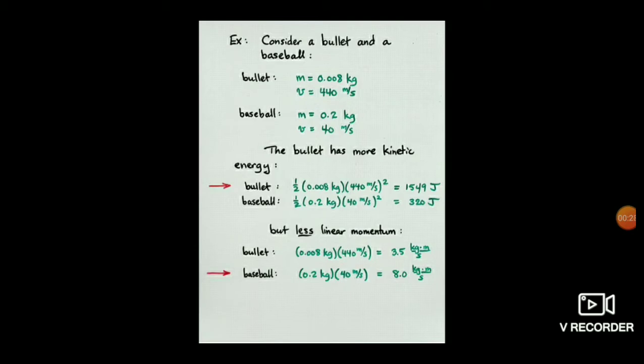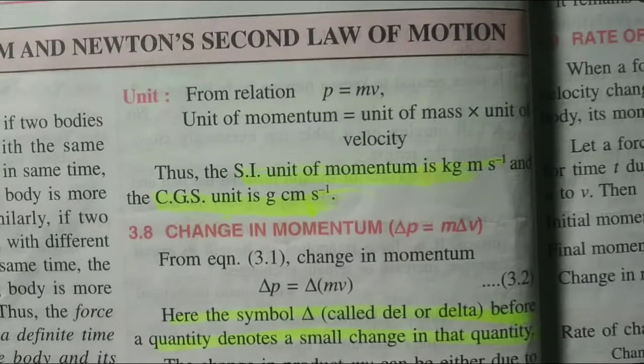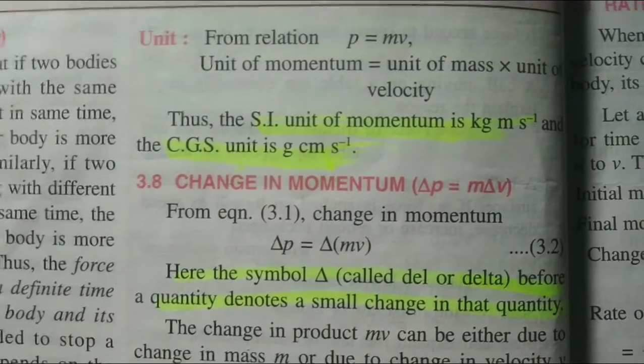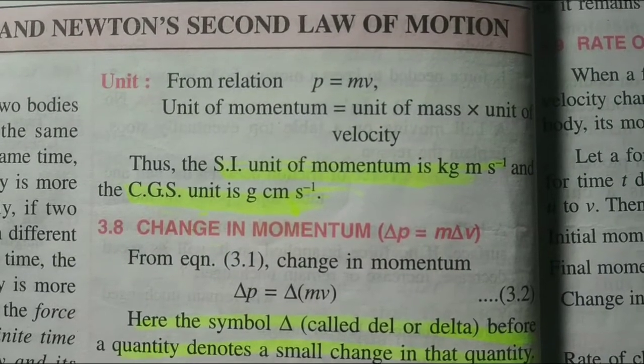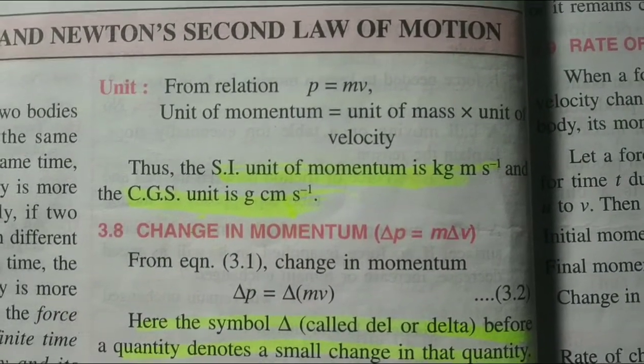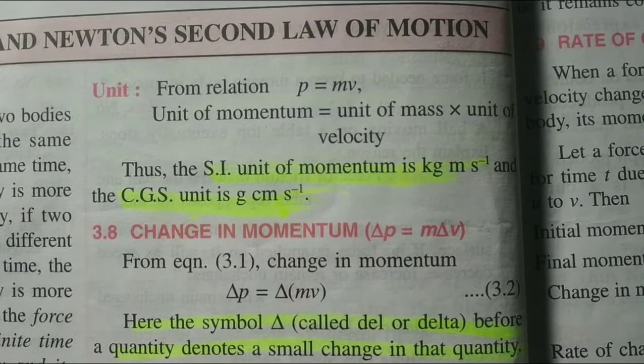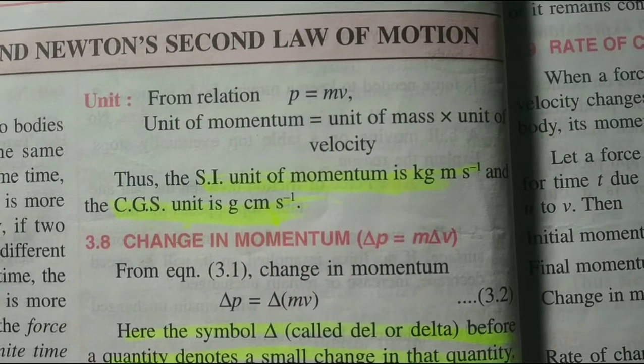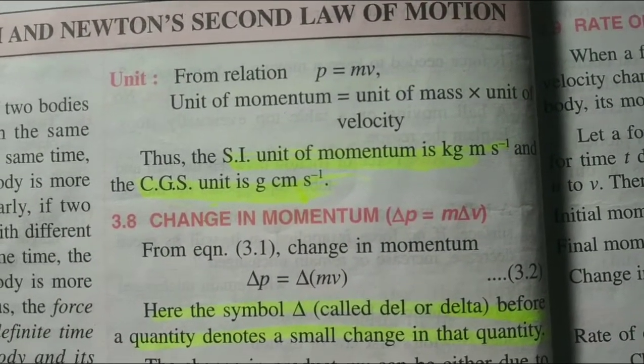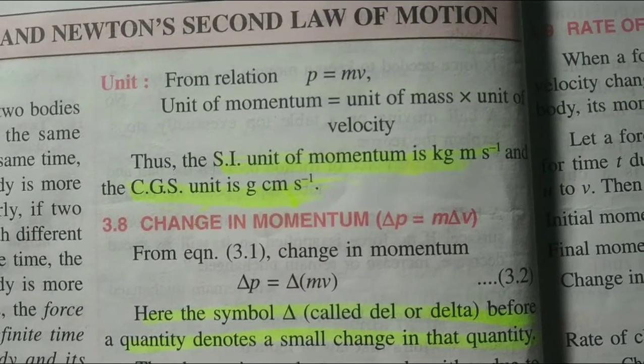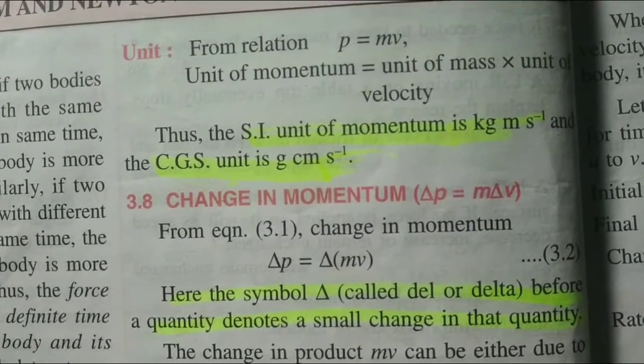Linear momentum definition is that it is the product of its mass and velocity of a body. This is the formula to calculate linear momentum. The SI unit of momentum is kg m/s, and the CGS unit is gram centimeter per second. SI unit kg is the unit of mass and m/s is the unit of velocity. It is not a particular unit of momentum, that's why kg m/s.